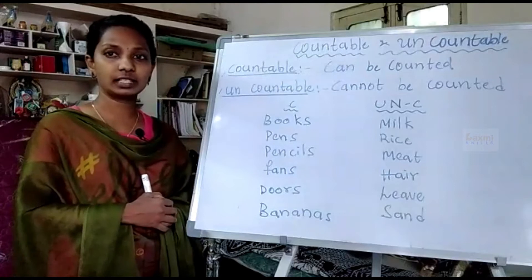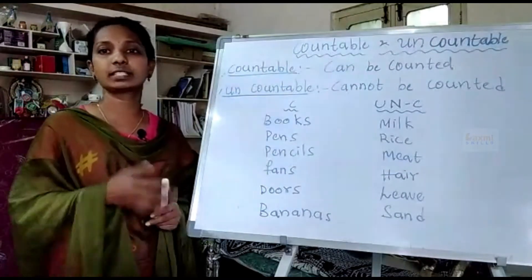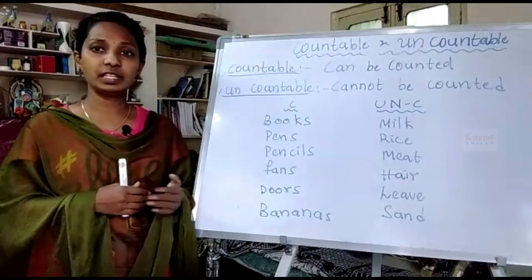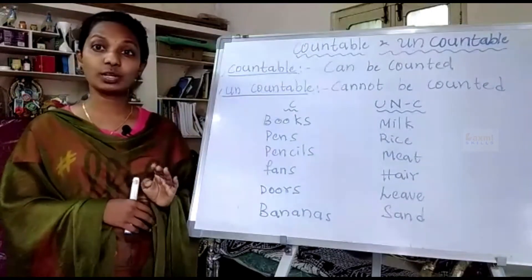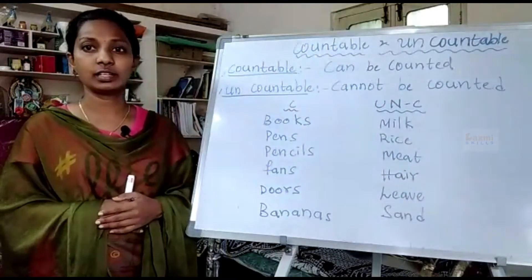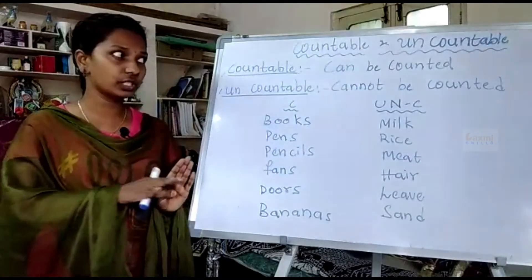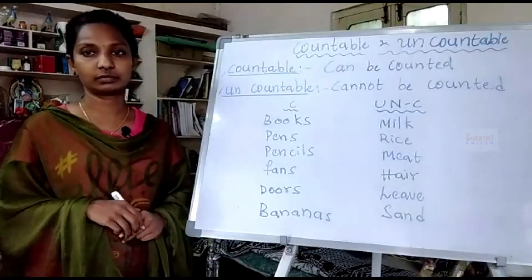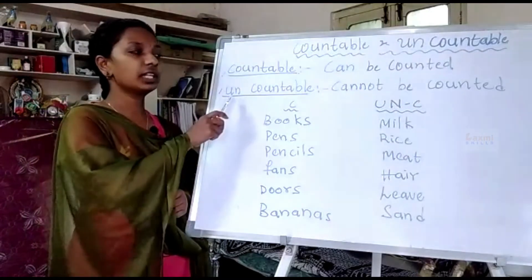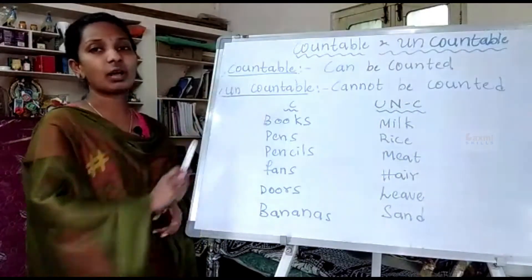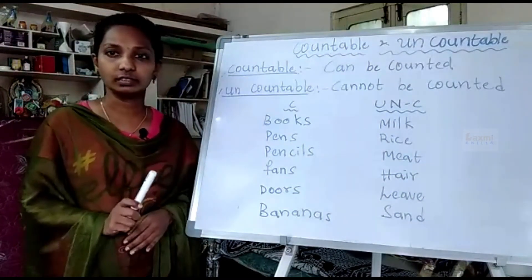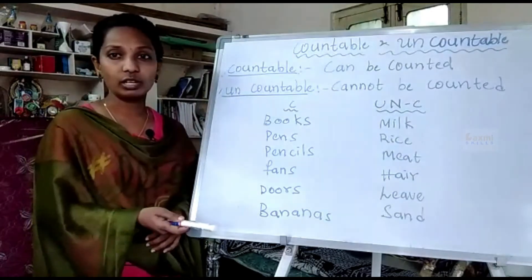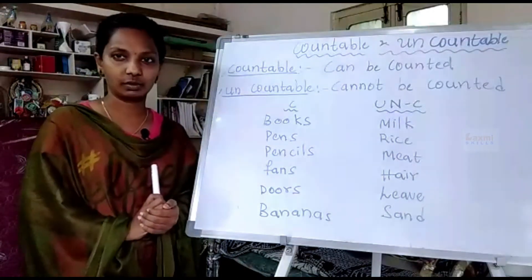In this world, many things cannot be counted. For example, we use the phrase 'counting the stars' to describe a prolonged meeting. Such phrases use uncountable nouns to make conversation interesting. Countable means things or material which can be counted, and these come under countable nouns. Material which cannot be counted comes under uncountable nouns.